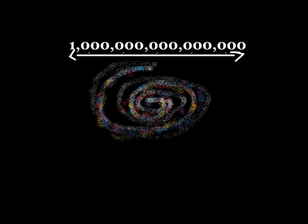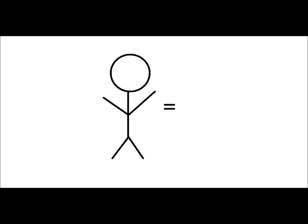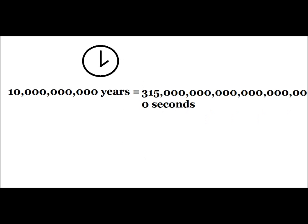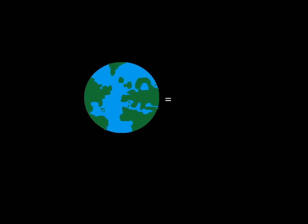To put these numbers to use, the Milky Way galaxy is about a quintillion kilometers long—that's six hundred quadrillion miles. There are about one octillion atoms in the average human body. Ten billion years is three hundred fifteen quadrillion seconds long, and the Earth weighs about six septillion kilograms—that's thirteen octillion pounds.